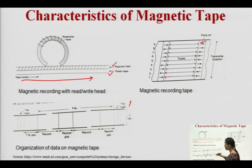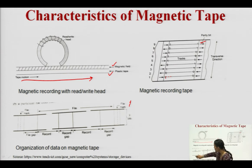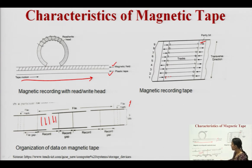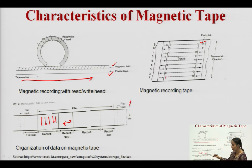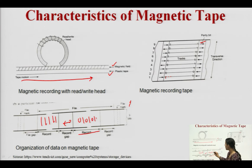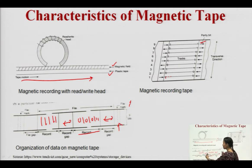The organization of data on magnetic tape: there is a gap, then data stored in the form of zeros and ones, then a record gap for error correction, then more data, then another record gap, followed by the end of file marker. In this manner, data is organized and stored on the magnetic tape.